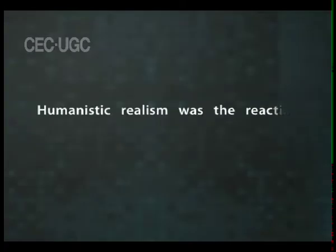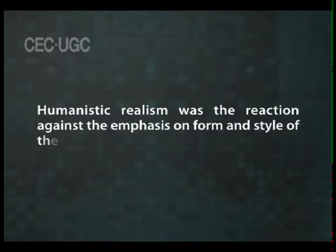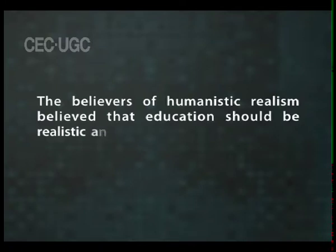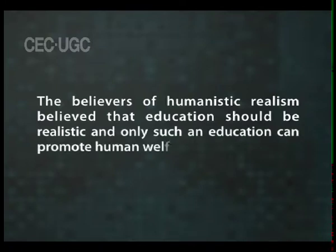Humanistic realism was the reaction against the emphasis on form and style of the old classical literature. It had great regard for the ancient literature, but it emphasized the study of content and ideas in the ancient classical literature to understand one's present social life and environment. The believers of humanistic realism believed that education should be realistic and only such an education can promote human welfare. For this, they advocated the study of Greek and Roman literatures and believed that the study of literature was essential to make human life successful.